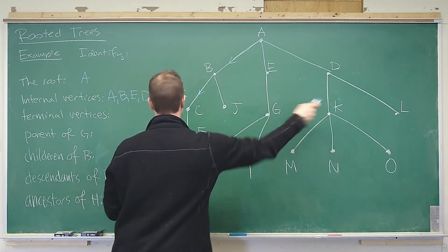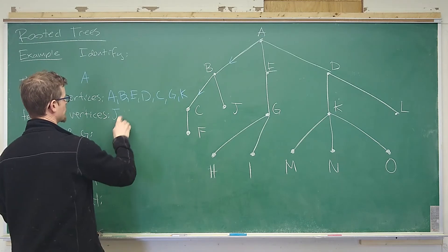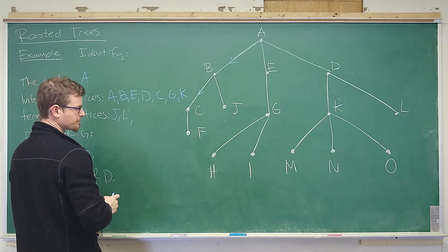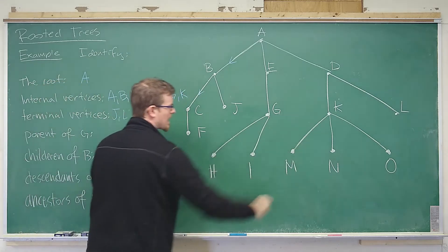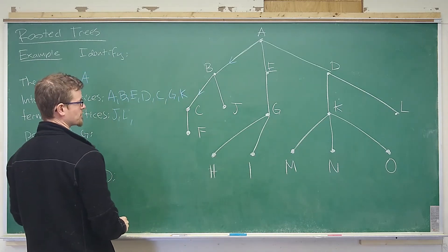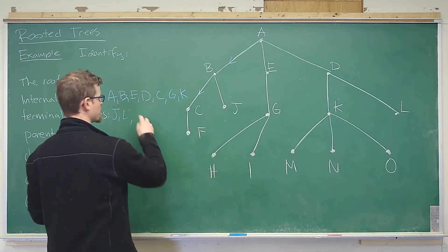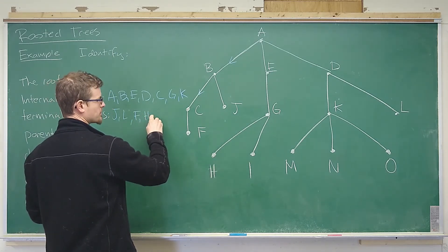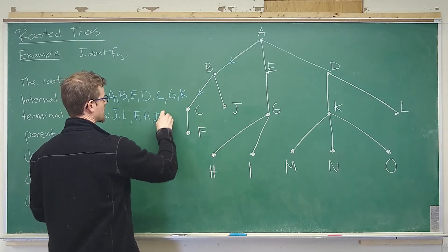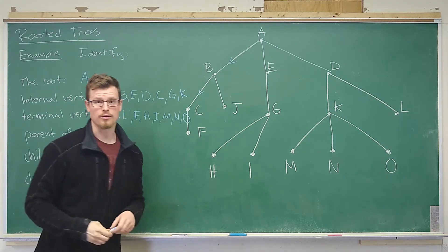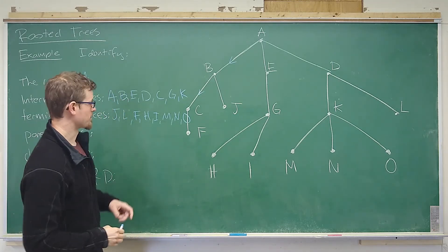So j and l are both terminal vertices because they don't have children. And then all along this bottom none of these vertices have children either. So f, h, i, m, n, and o are all terminal vertices.